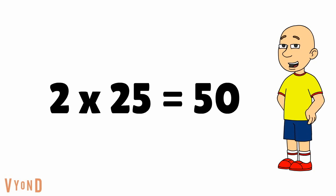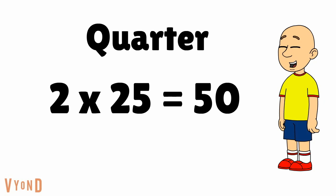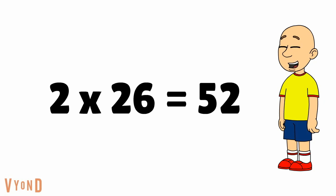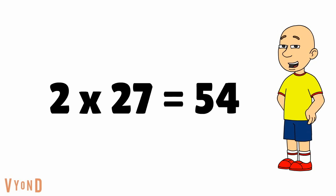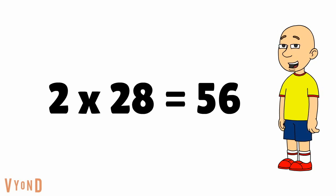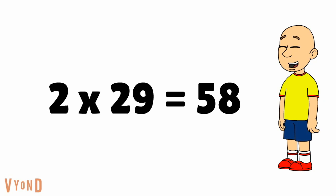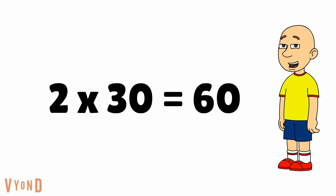And 2 times 25 equals 50. Hey, we already have reached a quarter through. Let's keep it going. 2 times 26 equals 52. 2 times 27 equals 54. 2 times 28 equals 56. 2 times 29 equals 58. 2 times 30 equals 60.